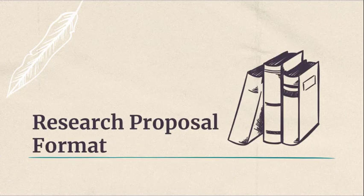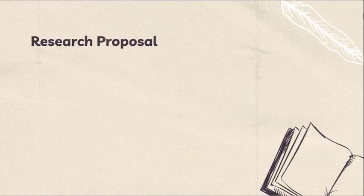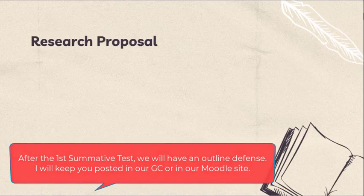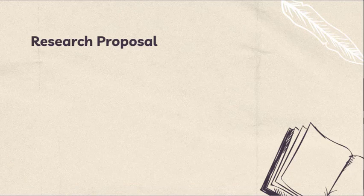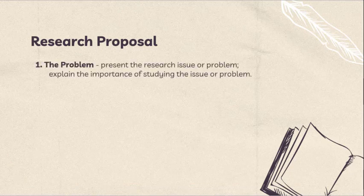Research Proposal Format. This is the research proposal format that we will use for this subject. After the 1-2 summative test, we will have an outline defense. Your proposal will contain five sections. First is the Problem. In this section, you will present the research issue or problem and explain the importance of studying the issue or problem. This is similar to the background and significance of the study from Practical Research. You may also include the scope and delimitation in this section.